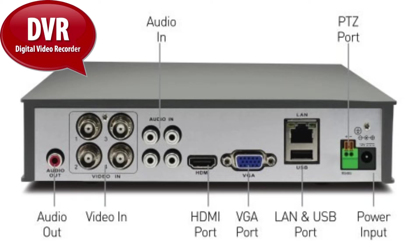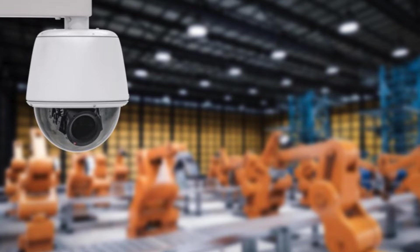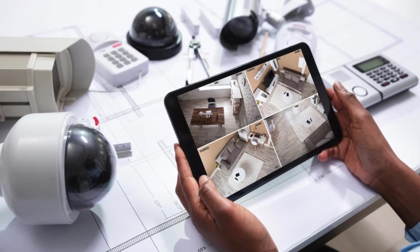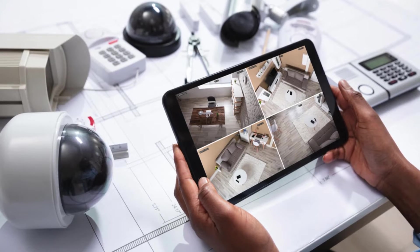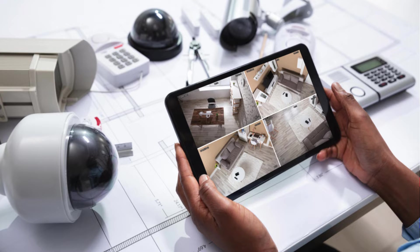What is a DVR? In simple terms, a DVR is what we call a Digital Video Recorder. It is like a high-tech video cassette recorder used for security cameras. It records and stores video footage from cameras, allowing you to watch live feeds, play back recorded videos, and see what happened when you weren't watching. Much like a VCR, a DVR has a hard drive inside it which enables you to store and record videos so you can easily revisit and check anything important.